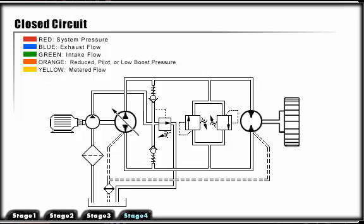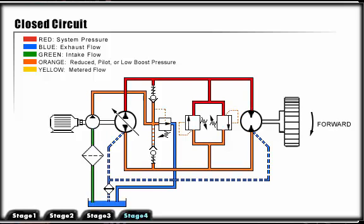When the hydraulic motor rotation is restricted or stopped, the high pressure relief valve opens and protects the system from overpressurization.